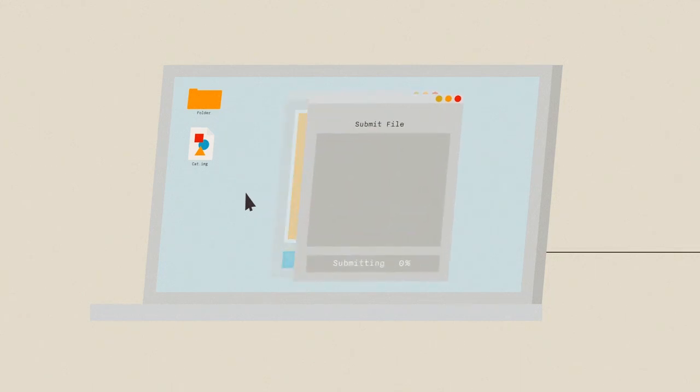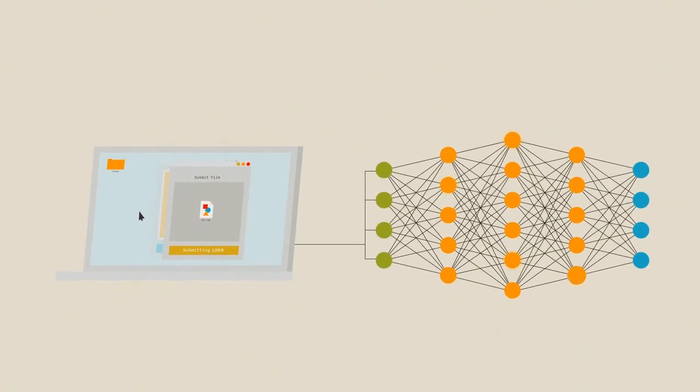Finally, runtime detection methods can be applied to flag any inputs an adversary may have tampered with by identifying abnormal activations caused by the adversarial inputs.